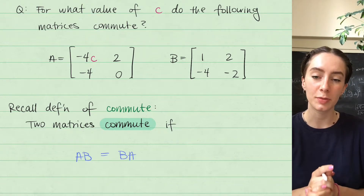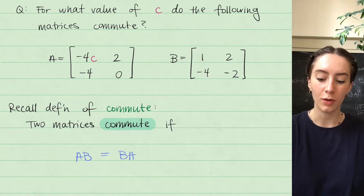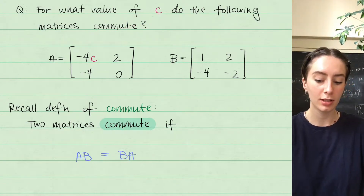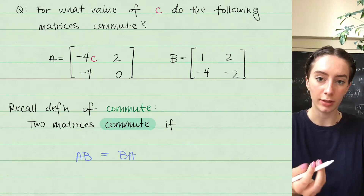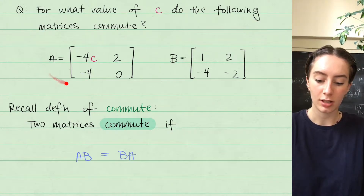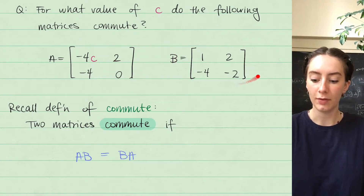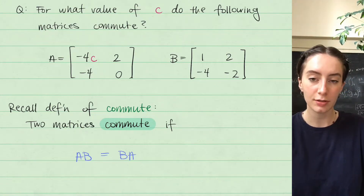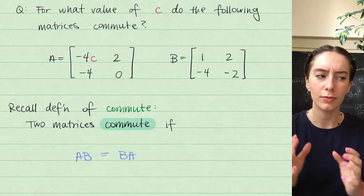Today's linear algebra problem is: for what value of C do the following matrices commute? We're trying to find a real number C such that matrix A — with entries negative 4C, 2, negative 4, 0 — and matrix B — with entries 1, 2, negative 4, negative 2 — commute.